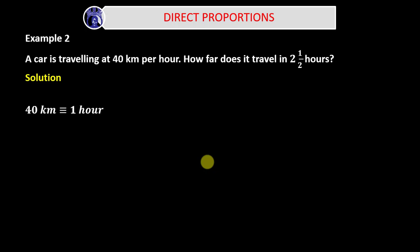That means in one hour the car travels a distance of 40 kilometers. A certain distance X will be equivalent to 2½ hours. We write it as a proportion: 40 kilometers over X equals 1 over 2½ hours. Hours cancels out hours on both sides.